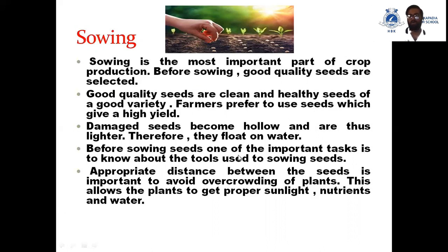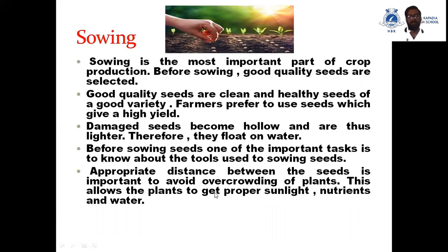Damaged seeds become hollow and are thus lighter, so they float on water. Before sowing the seeds, one of the important tasks is to know about the tools used for sowing seeds. Appropriate distance between the seeds is important to avoid overcrowding of plants. This allows the plants to get proper sunlight, nutrients, and water. So three steps: good quality seeds, no damaged seeds, and proper tools with appropriate distance.